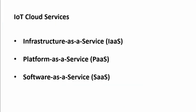The services provided by these IoT cloud platforms fall into three kinds. In short they are called IaaS, PaaS, and SaaS — that is, Infrastructure as a Service, Platform as a Service, and Software as a Service.